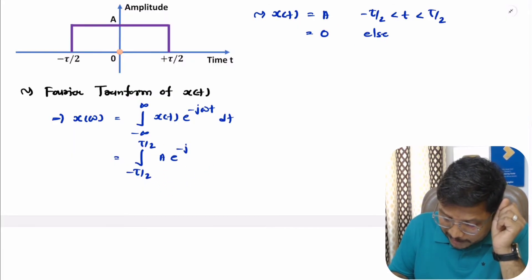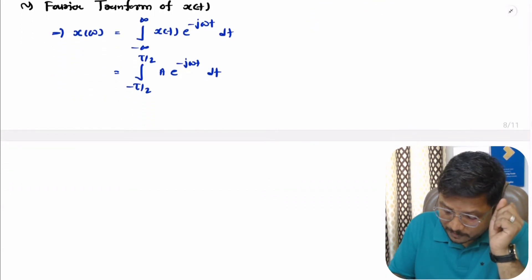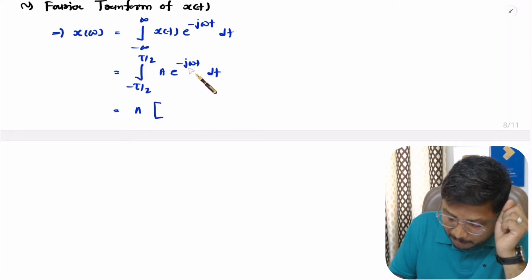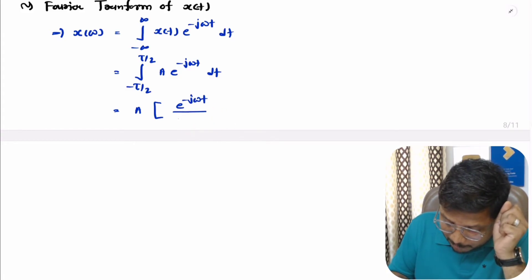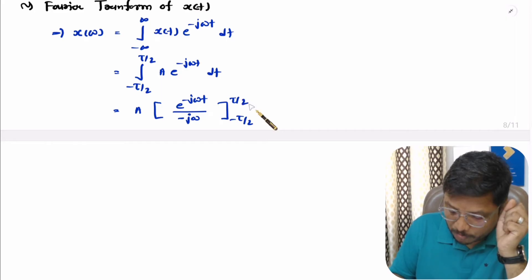Now we need to simply integrate this. We take the constant A outside, and the integration of e to the power minus jωt gives e to the power minus jωt divided by minus jω, with the limit from minus τ/2 to plus τ/2.